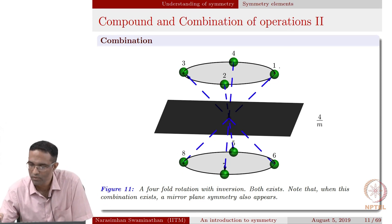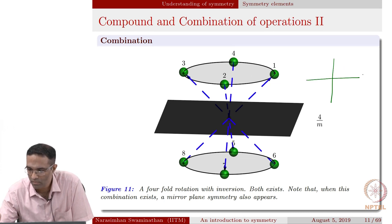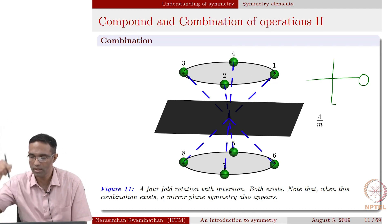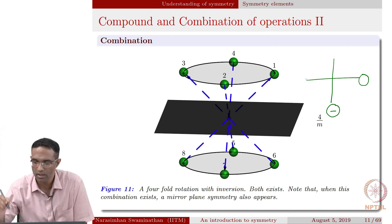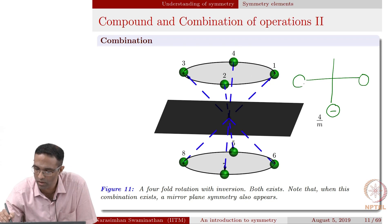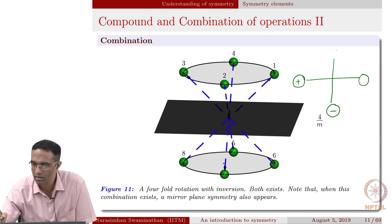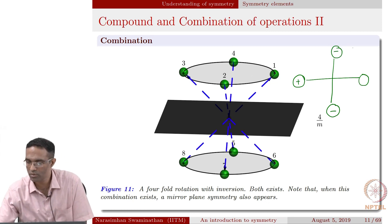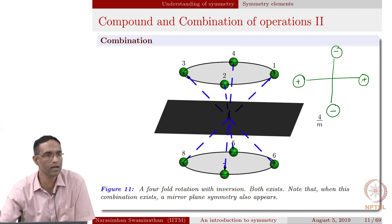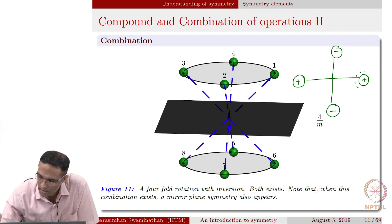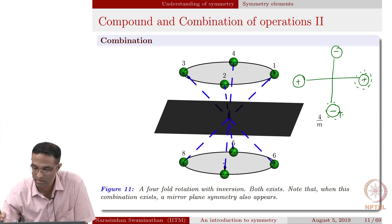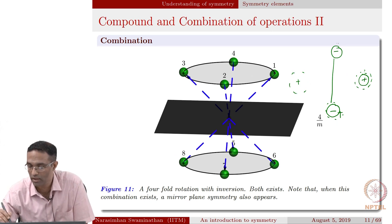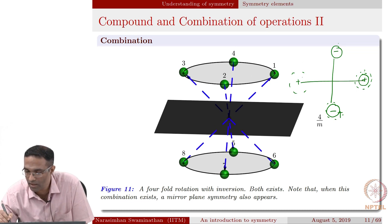We start from atom 1, on top. Perform a fourfold rotation and a mirror perpendicular to it — I generate an atom here. Again a fourfold rotation, and a fourfold rotation of the bottom one with a mirror plane, generating another atom on top. Continuing: a fourfold rotation and mirror gives a minus, another fourfold rotation and mirror gives a plus, then a minus, a plus, and finally a minus. Keeping this up, you fill out all eight positions.